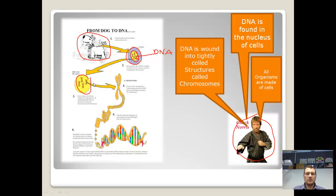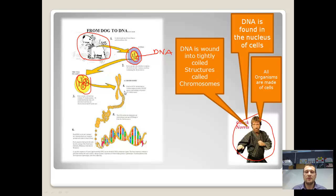Here's a close-up of the nucleus, and inside it we can see these structures here. These structures look like little X's. These things are called chromosomes. Chromosomes are made of DNA. In humans we have 46 chromosomes, or 23 pairs of chromosomes, and every single one of those chromosomes is made up of long, tightly coiled lengths of DNA.